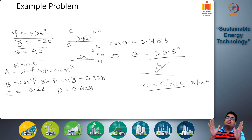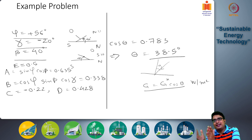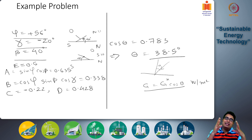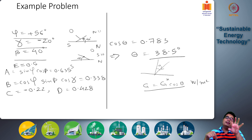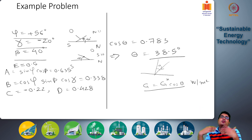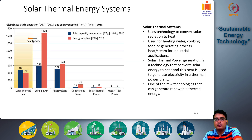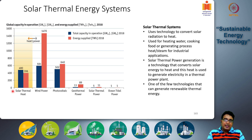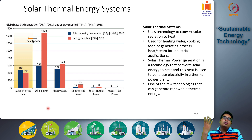One simple method is to convert light energy entirely into heat, and then use this heat either directly or for power generation through a thermal power plant. This kind of technology, which converts the sun's light energy into heat and then uses that heat for thermal applications or converts it further into electricity, is called solar thermal energy systems — the first type of technology we will discuss.